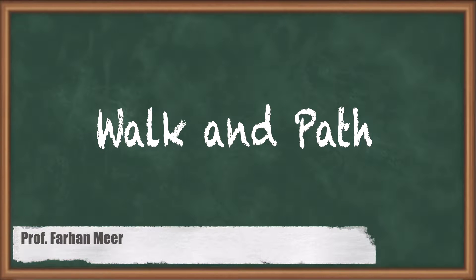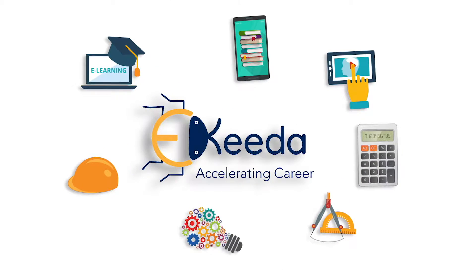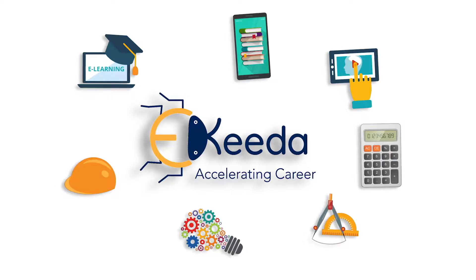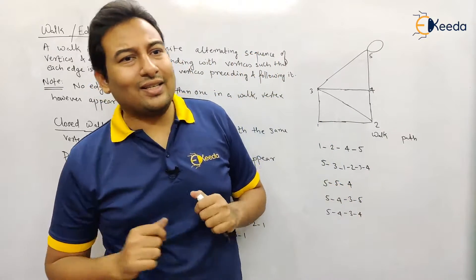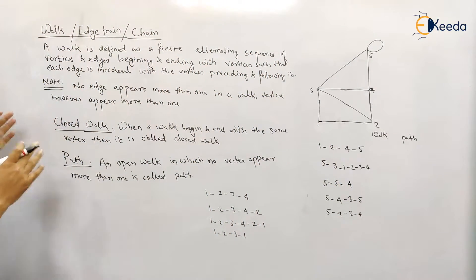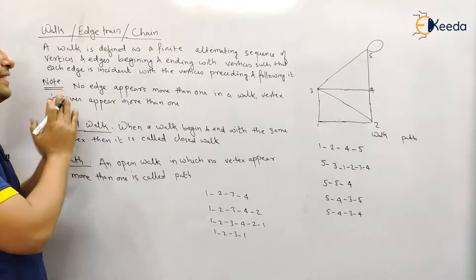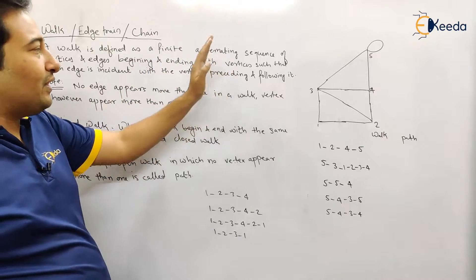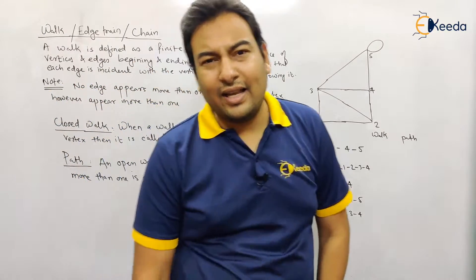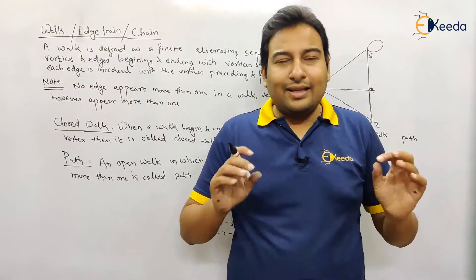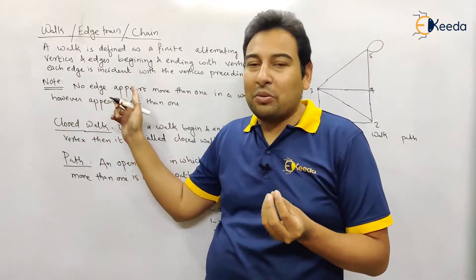Hello friends, in this video we'll discuss walk and path. A walk is defined as a finite alternate sequence of vertices and edges, beginning and ending with vertices, such that each edge is incident with the vertices preceding and following it. This is the technical definition, which is nearly impossible to understand, so let me give you the simplest summary.